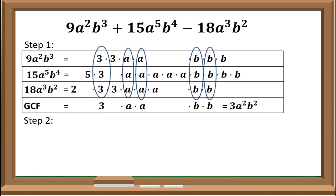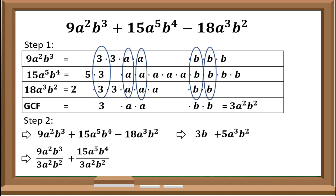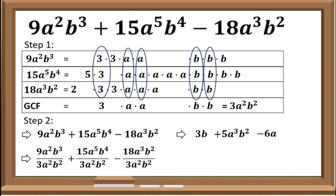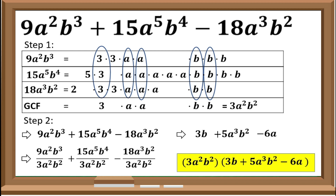Step 2: our expression is 9a squared b cubed plus 15a raised to 5 b raised to 4, minus 18a cubed b squared. Dividing each term by 3a squared b squared: 9a squared b cubed divided by 3a squared b squared is 3b. 15a raised to 5 b raised to 4 divided by 3a squared b squared is 5a cubed b squared. Negative 18a cubed b squared divided by 3a squared b squared is negative 6a. Step 3: the factors are 3a squared b squared and (3b plus 5a cubed b squared minus 6a).